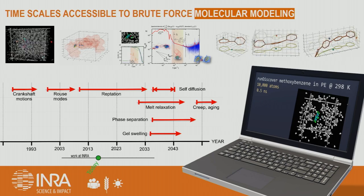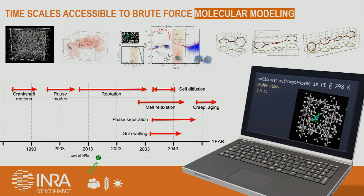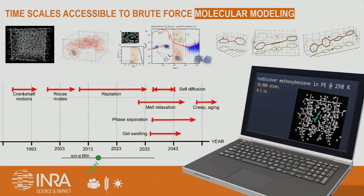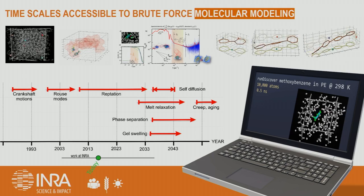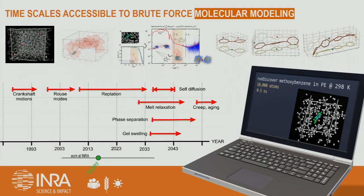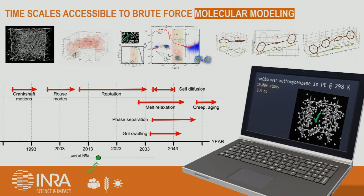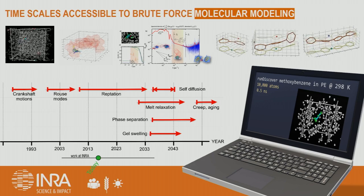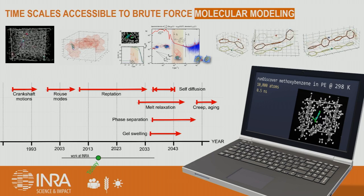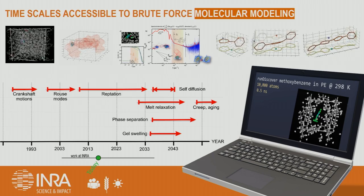You have here diffusion of gases, diffusion of small substances such as methoxybenzene, and diffusion of oligophenyls. We can study diffusion using brute force in polyolefins quite easily with reasonable effort, just using sufficiently large computers.